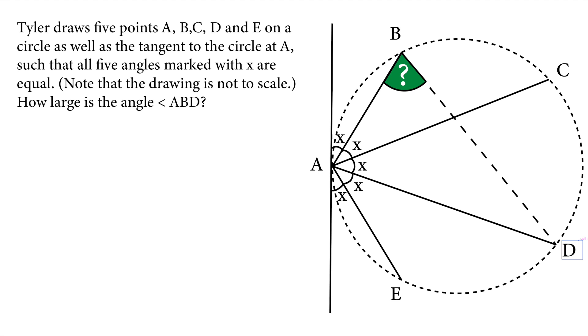Tyler draws 5 points A, B, C, D and E on a circle as well as the tangent to the circle at A such that all 5 angles marked with X are equal. Note that the drawing is not to scale. How large is the angle ABD?